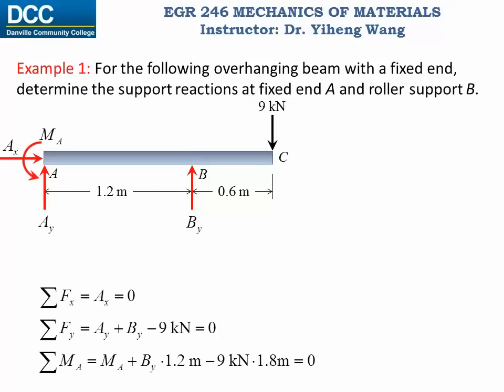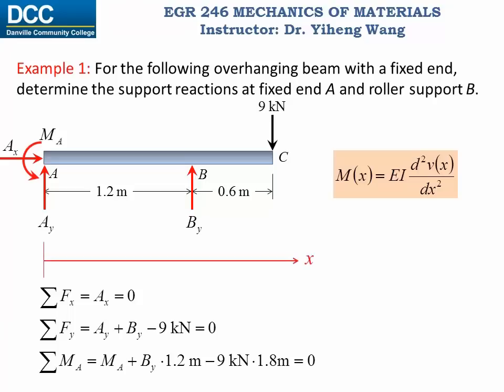Now we need to construct the elastic curve of the beam. The elastic curve is the graph of the deflection function which is determined by integrating the bending moment function twice within the restraints of boundary conditions and continuity conditions. Therefore we need to first determine the bending moment function of the beam as a function of position x. To determine the bending moment function, we will use the method of sections, and for this problem we will need to section this beam twice.